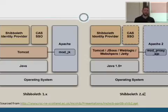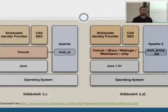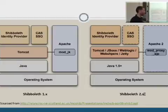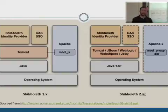Now we'll go through some of the new features of Shibboleth 2. First, we'll look at a side-by-side comparison of Shibboleth 1.3 and Shibboleth 2. Here you can see on the left Shibboleth 1.3. The main differences are that at a default install we're going to use mod_proxy instead of mod_JK, because the support is in there now and it's easier to configure.